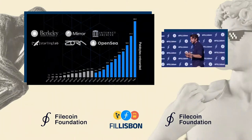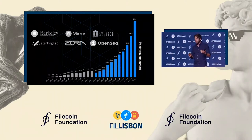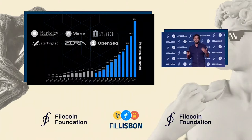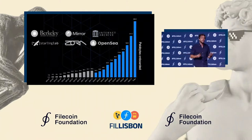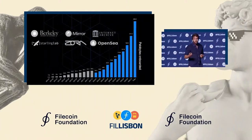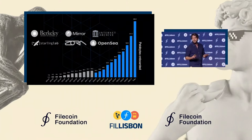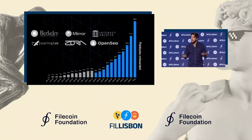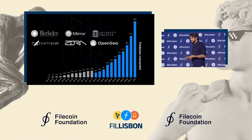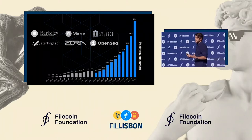It's with partners like Berkeley, Starling Lab, Mirror, Zora, Internet Archive, and OpenSea. Whether you're Web 2 or whether you're Web 3, everybody's benefiting from lower costs, from immutability, and from verification. So everyone's really excited.